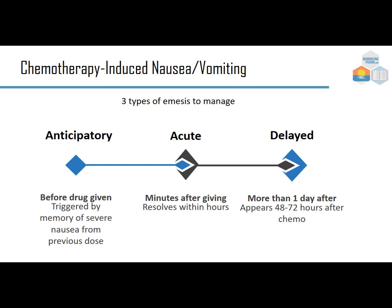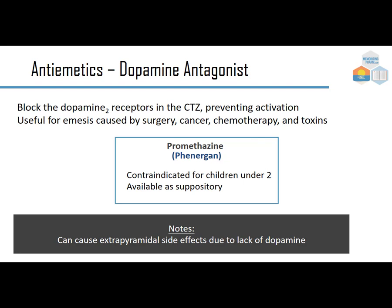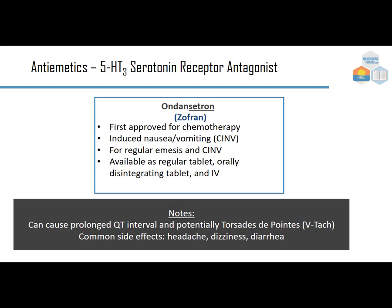Promethazine (Phenergan) is a dopamine antagonist — it blocks dopamine D2 receptors in the CTZ to prevent activation. It's useful for emesis caused by surgery, cancer chemotherapy, or toxins. It's contraindicated in children under 2 but is available as a suppository for actively vomiting patients. It can cause extrapyramidal effects due to dopamine blockade.